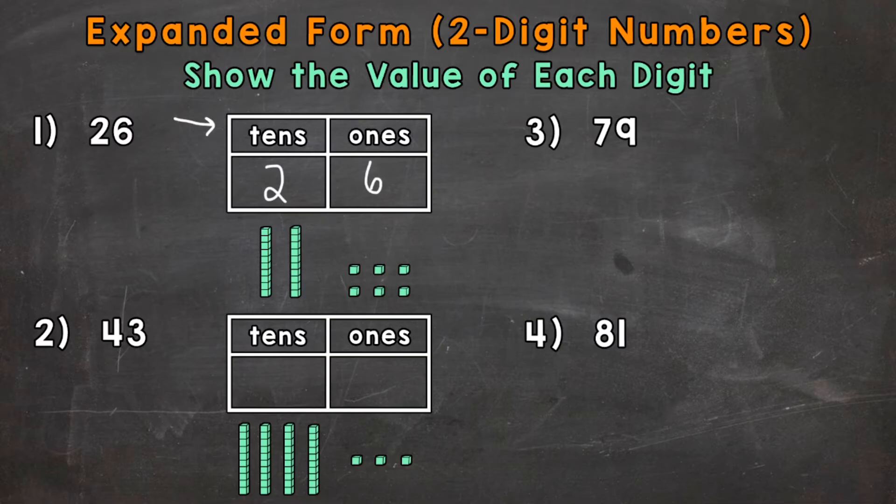So two groups of 10 is what that 2 in the tens place represents. And we have place value blocks right here to show that. So that means two groups of 10. So what does the value of two groups of 10 have? Well, 20. Two groups of 10 is 20. So the value of that 2 is 20. So we'll do 20 plus the value of the 6.